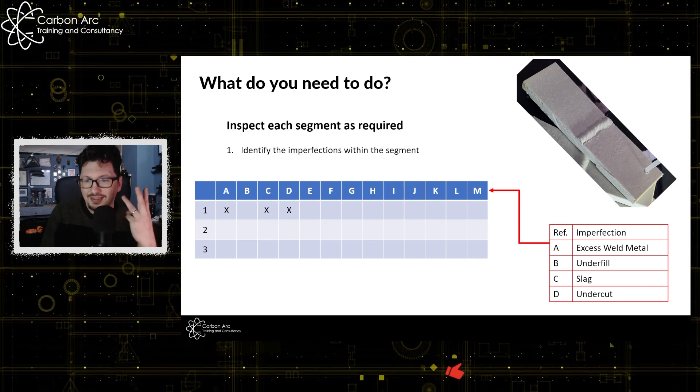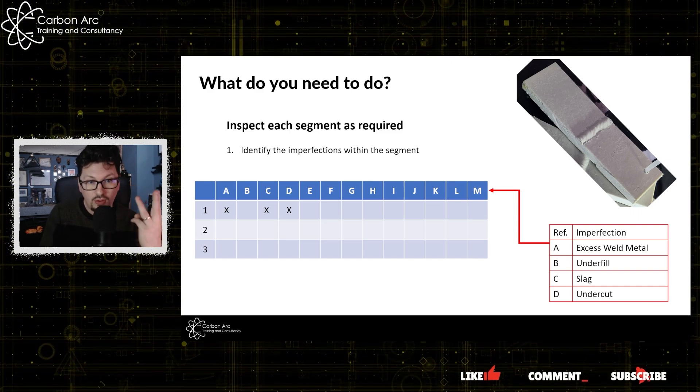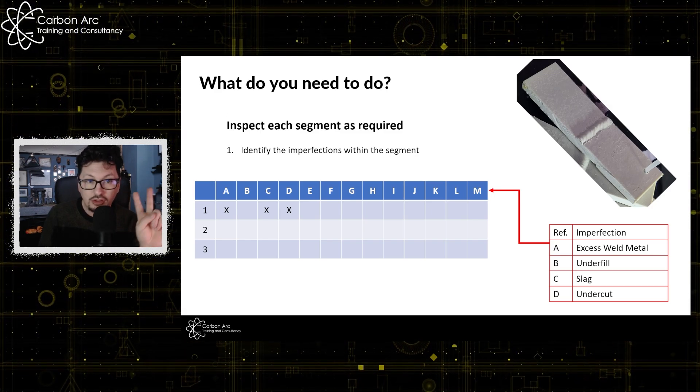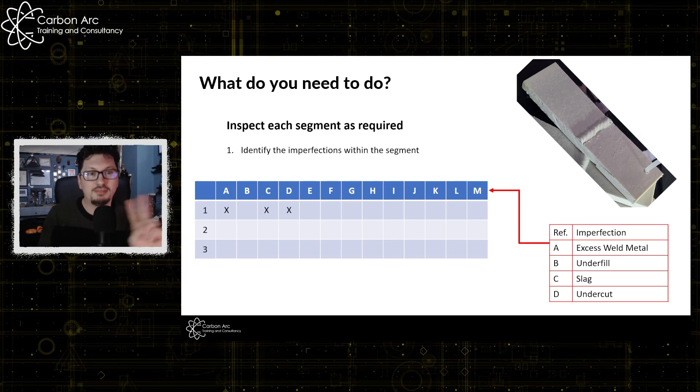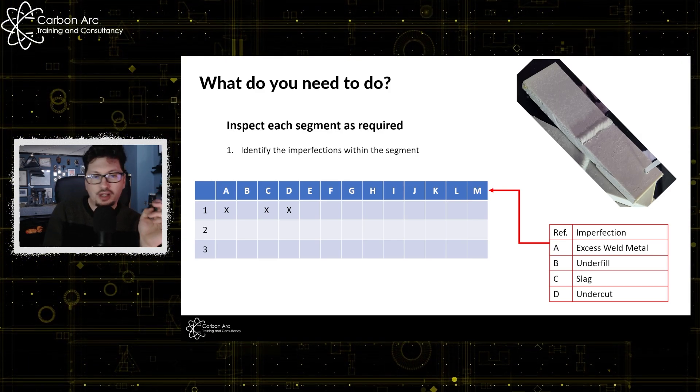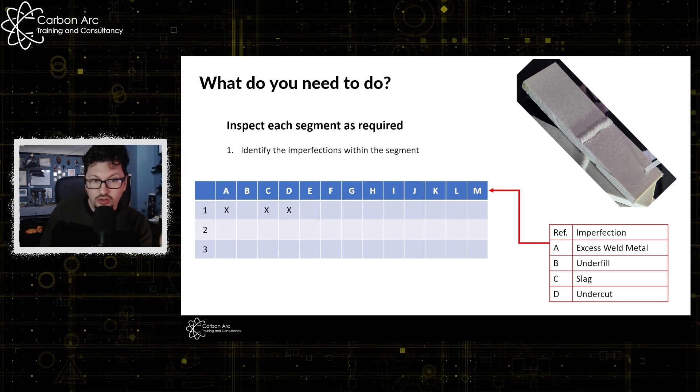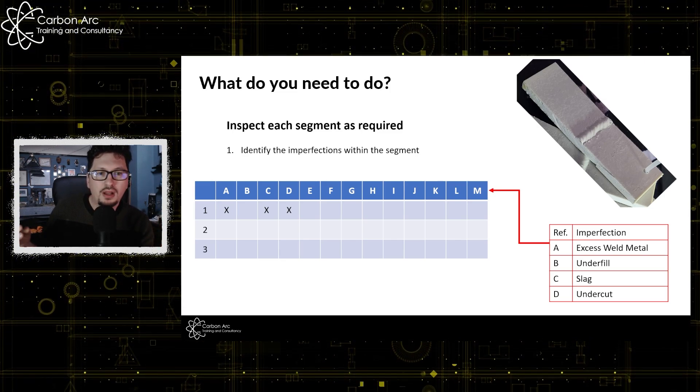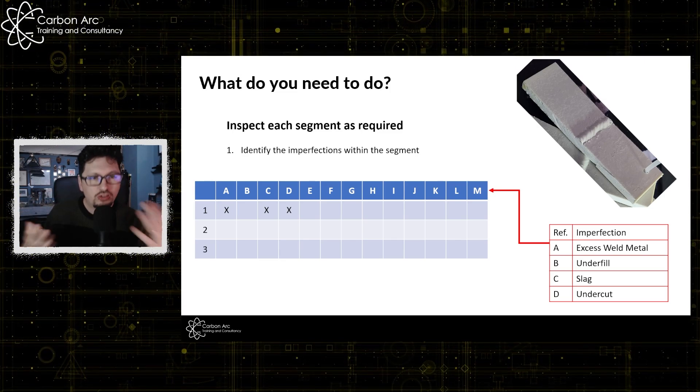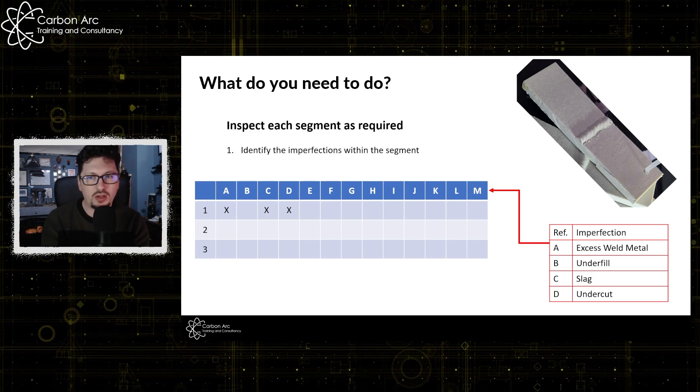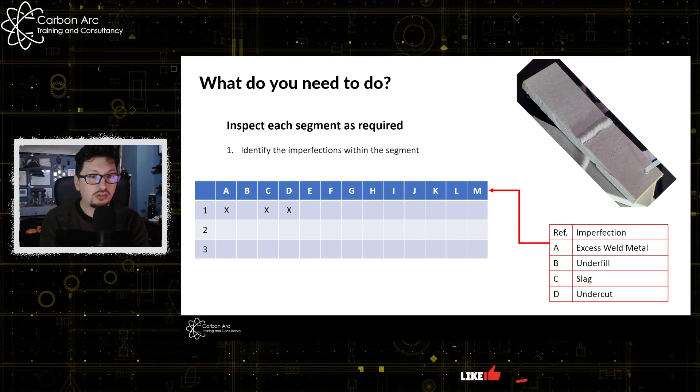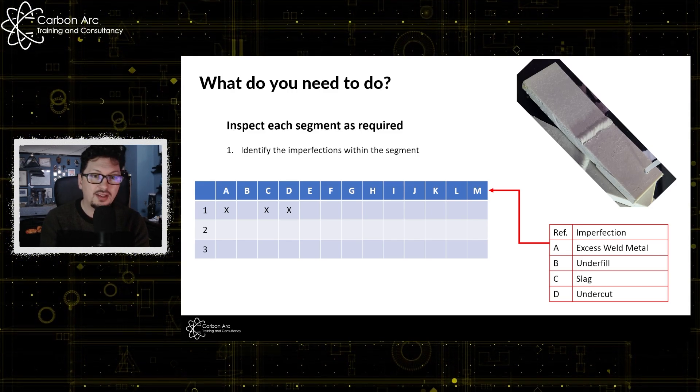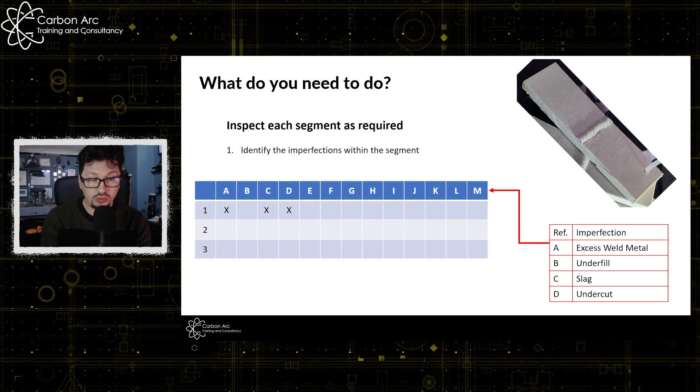But if I said there was underfill, so I put four, that would be my three correct, minus one of the incorrect, which would get me two marks. So this is negative marking. So if you put a cross on every box, you will end up with a minus figure in theory. Just get zero and stop. But you've got to be accurate. You have to make sure we're identifying defects correctly. Because if not, if you over inspect, then you're going to lose marks and you're going to fail.